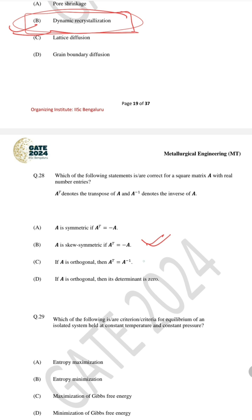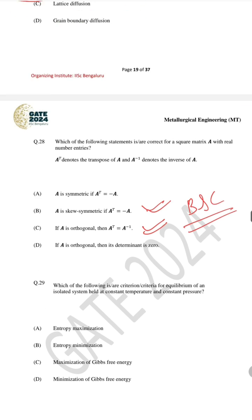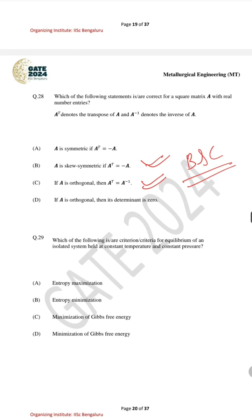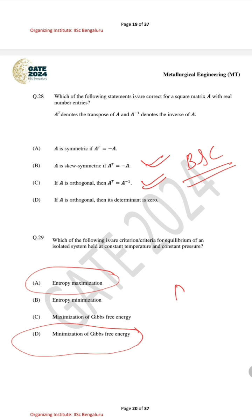For question number 29, also MSQ, which criteria apply to the equilibrium of an isolated system held at constant temperature and constant pressure — the correct answers are A and D: entropy maximization and minimization of Gibbs free energy.